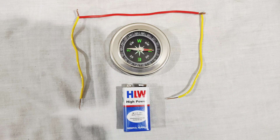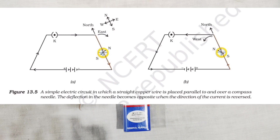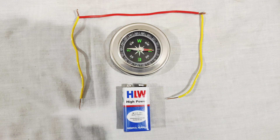Another thing that I will explain through this video is: when we change the direction of current, the direction of magnetic field also changes. So before I show the second thing, let's check the effect of current.